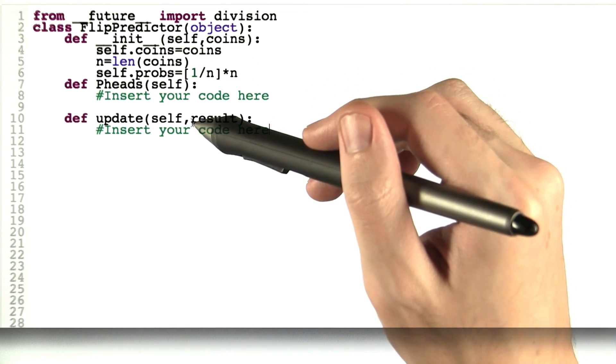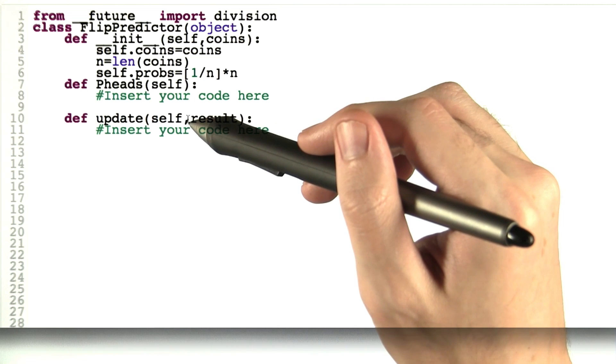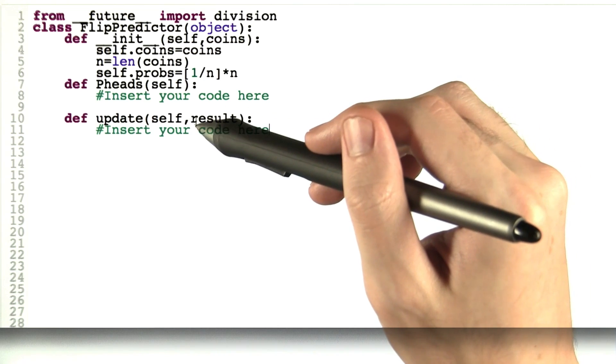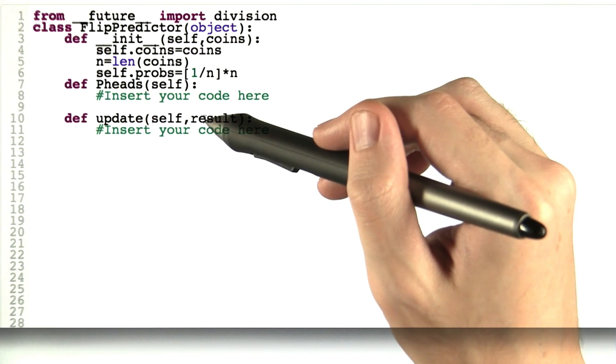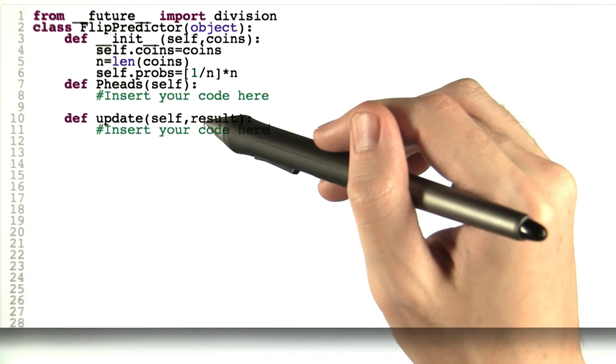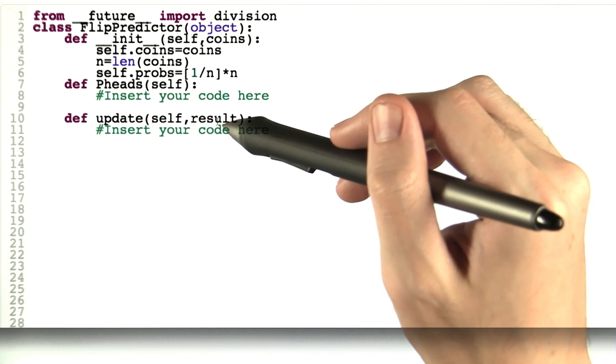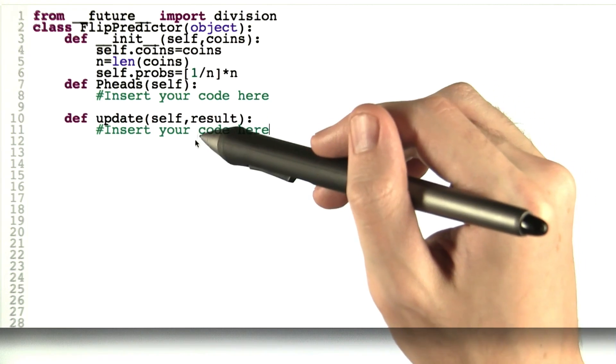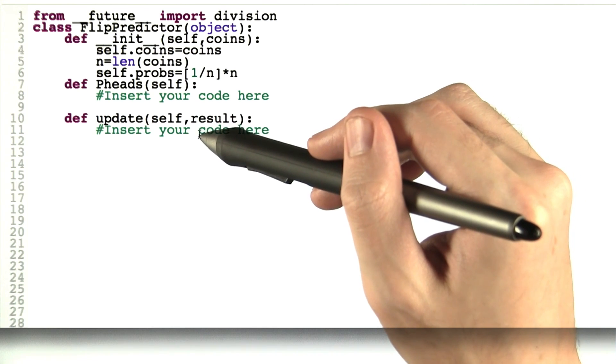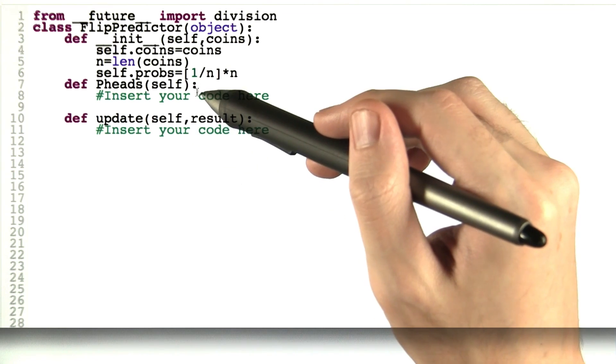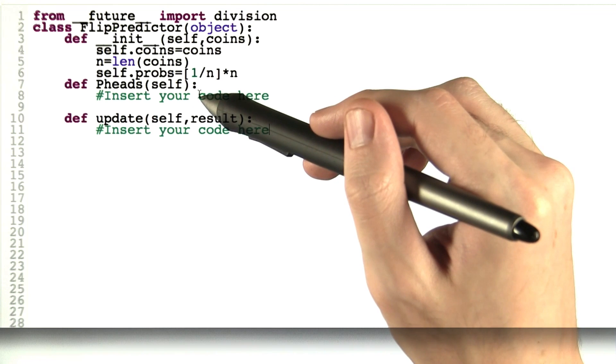Then for the slightly trickier part, I want you to write an update function. And that's going to take a result, either an h or a t. And based on that result, you're going to update self.probs so that pheads will return the correct value in the future.